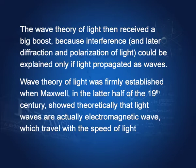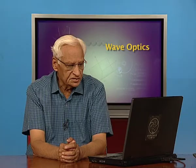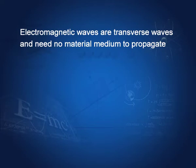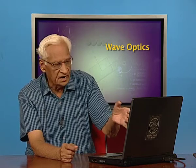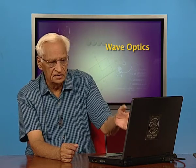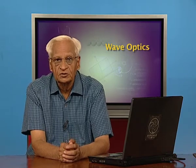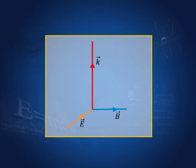Wave theory of light was firmly established when Maxwell, in the latter half of the 19th century, showed theoretically that light waves were actually electromagnetic waves which travel with the speed of light. Electromagnetic waves are transverse waves and need no material medium to propagate. It is the magnetic field and the electric field which propagate in phase, and they are both perpendicular to the direction in which the light travels.